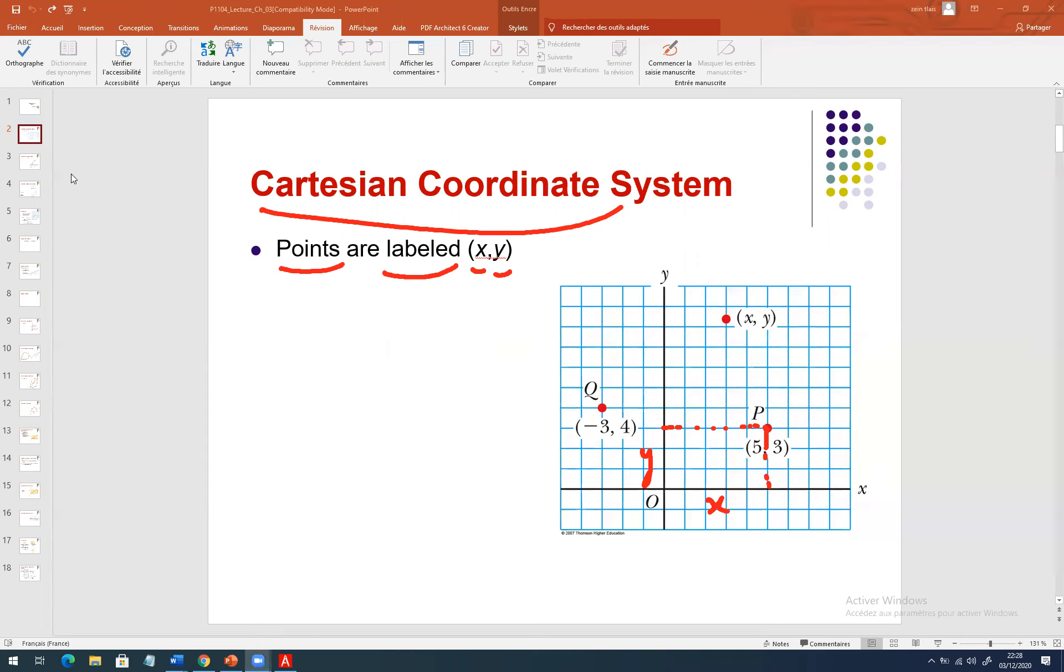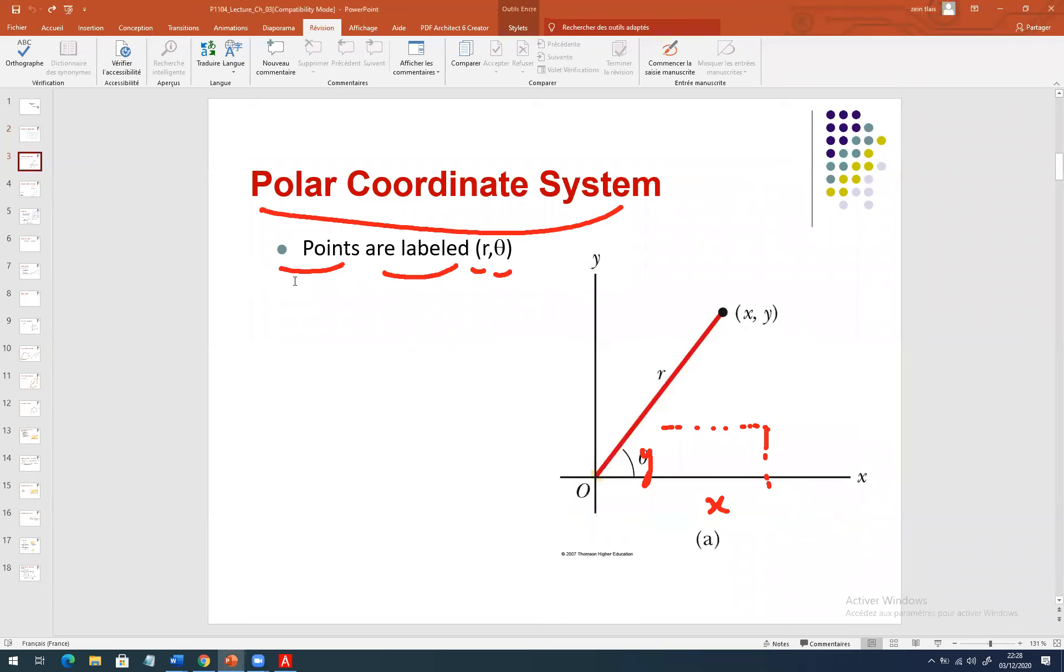Now, we talk about the polar coordinate system. It means we have to identify the point by r and by theta. r is the distance between the center of x and y, between the center O and the position of the point A. OA, its scalar quantity, is equal to r.